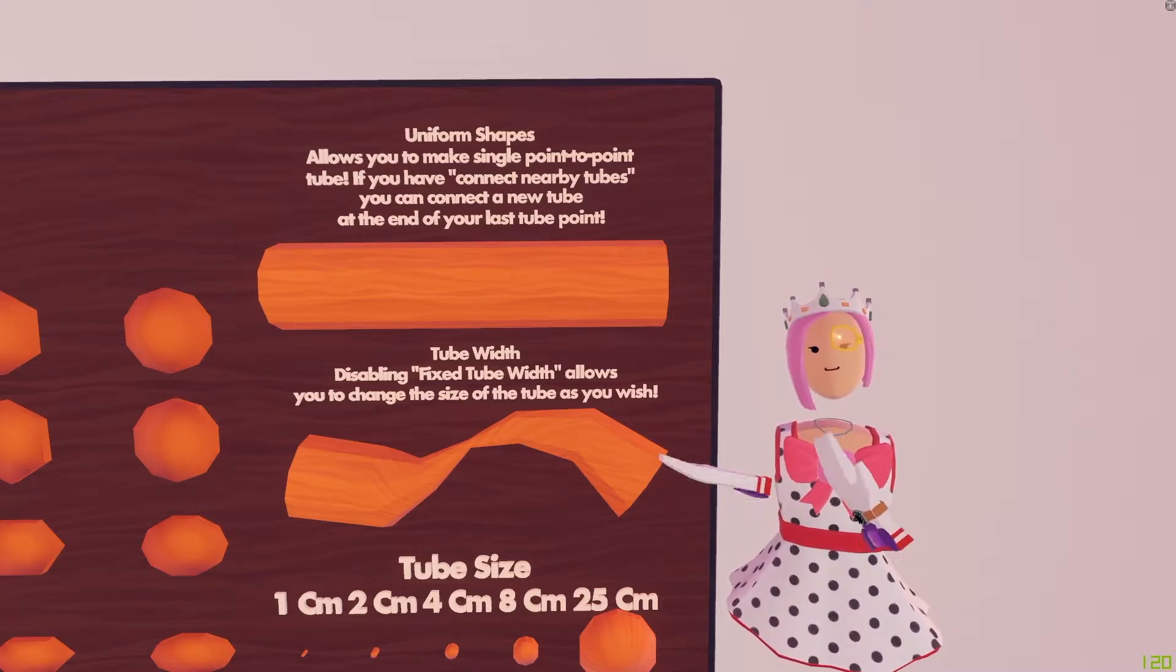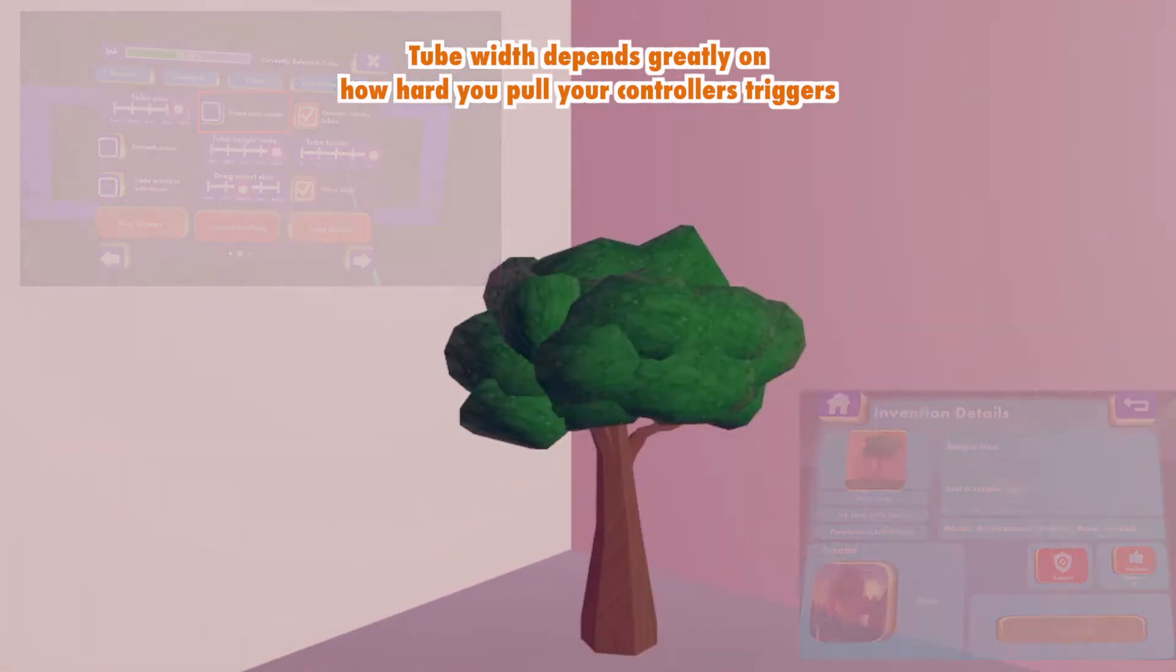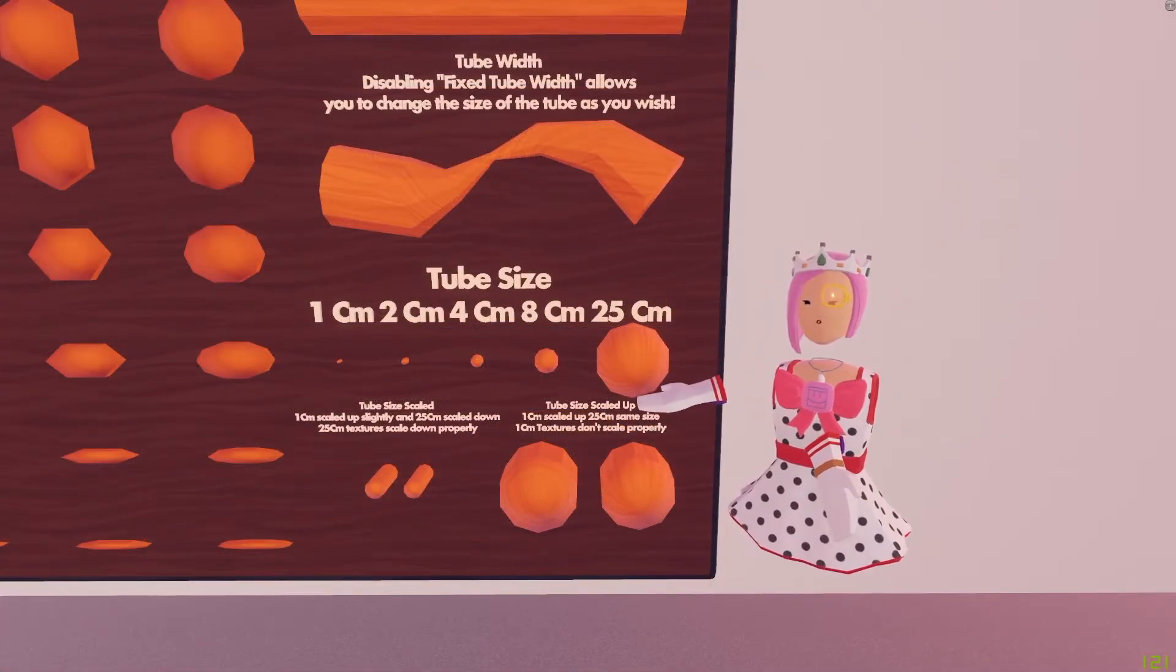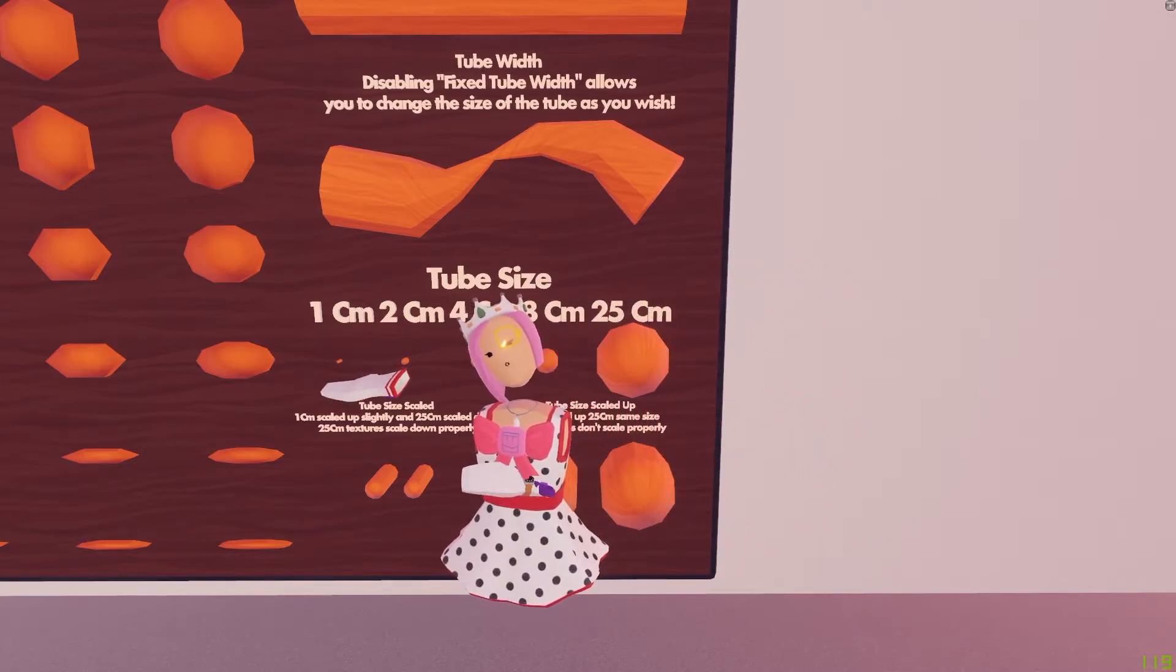Now, with tube width, disabling fixed tube width allows you to change the size of the tube as you wish. These are the different tube sizes: 25, 8, 4, 2, and 1.